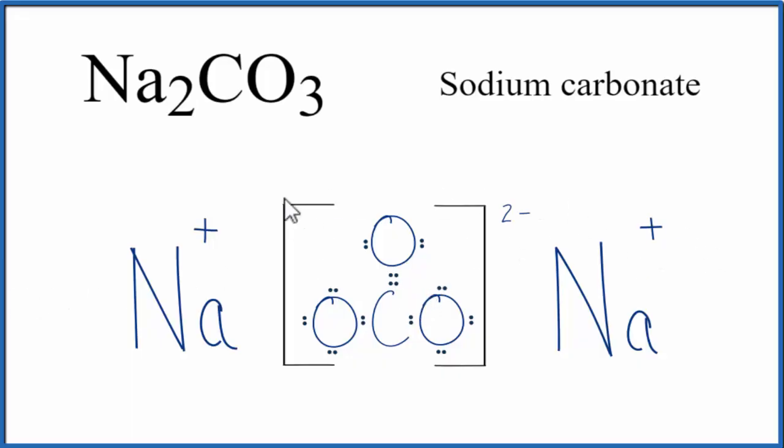Note that this is what we call a formula unit. When you have Na2CO3, sodium carbonate, it's made up of a group of these formula units in a repeating pattern called a crystal. So this is the Lewis structure for one formula unit of Na2CO3.